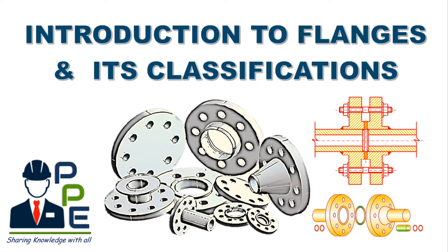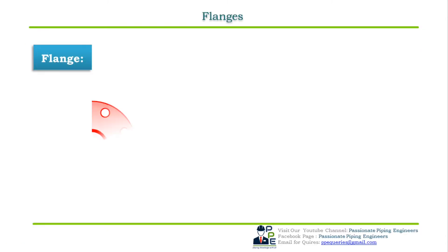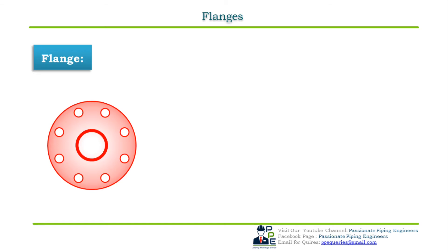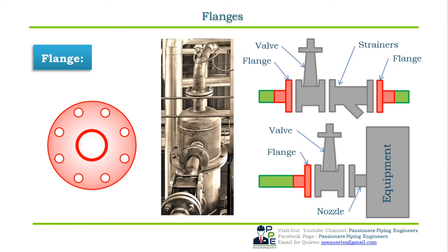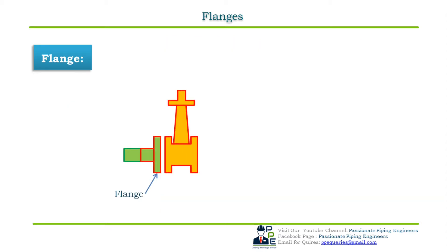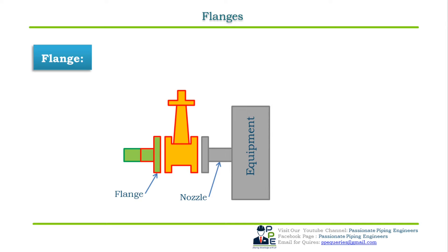In this video we will learn about the introduction to flanges: what are flanges, where they are used, why they are used, and the classification of flanges. A flange is a disc-shaped component used for connecting pipes to walls, piping specialty items such as strainers, instrument items such as level gauges, and all types of equipment or any other integral component within the piping system. It is the most important component in the piping system.